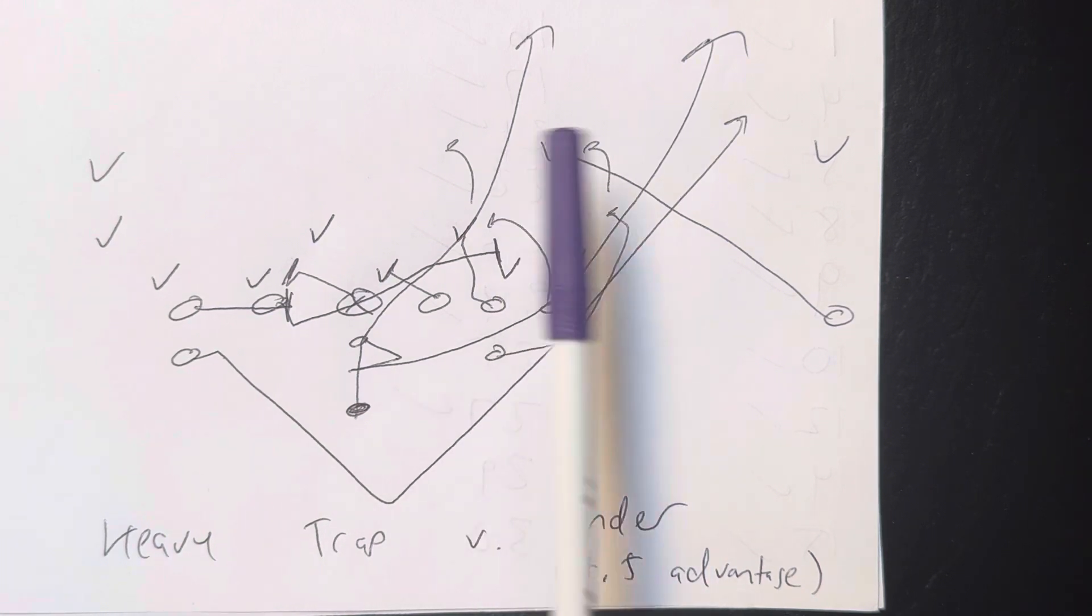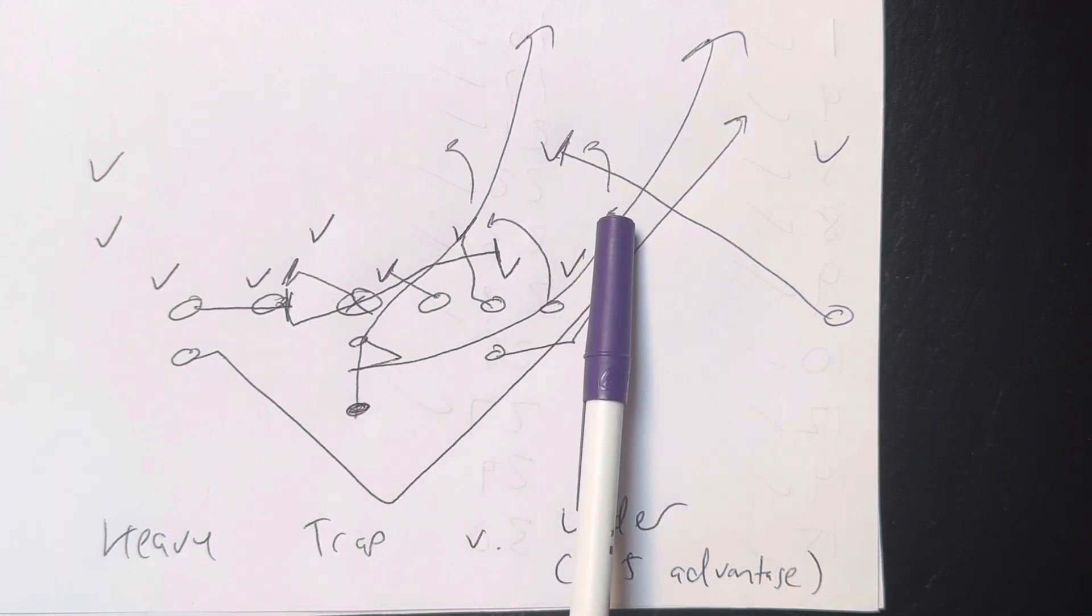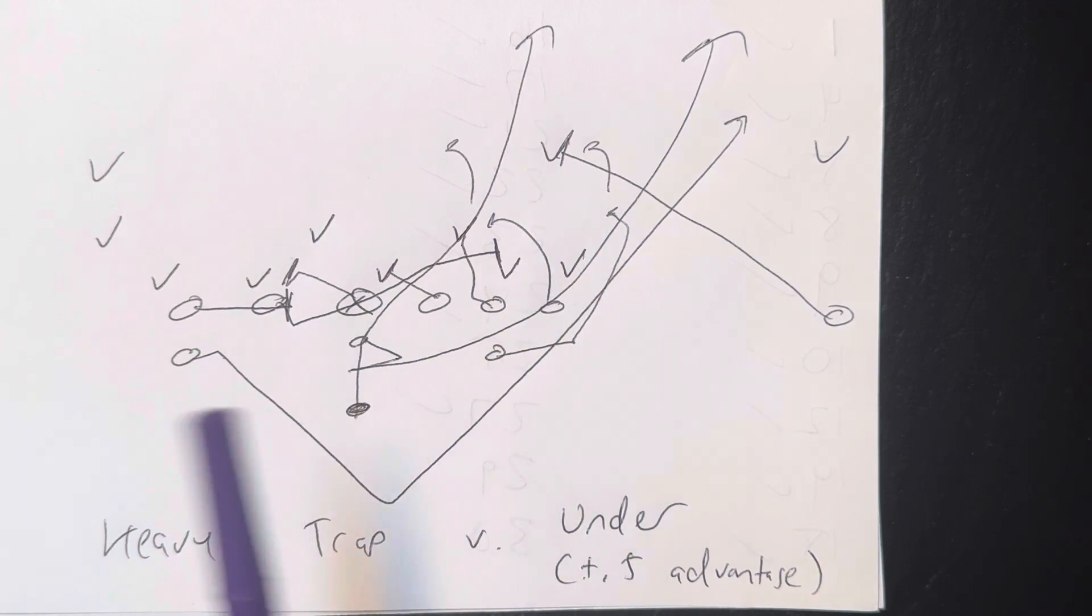Place-side A-back's going to arc the second to the third level player, so the odds are he's going to end up on the safety, and you're going to get two on the safety. Backside A-back's going to leave at the snap and run the pitch. Quarterback's going to take the snap, jump play side, and point the ball over at the center.